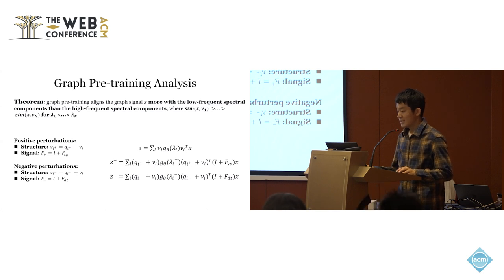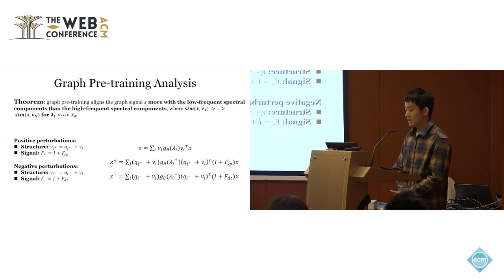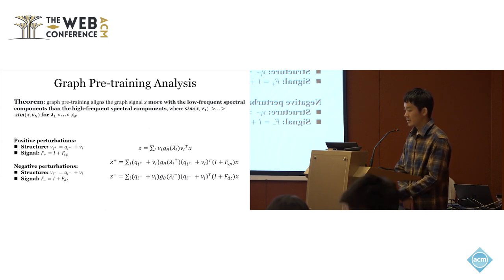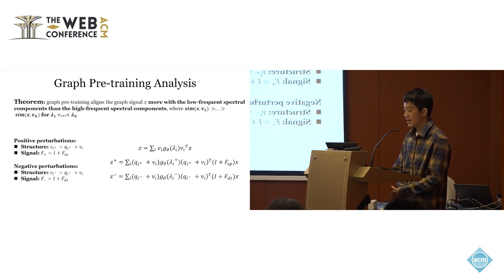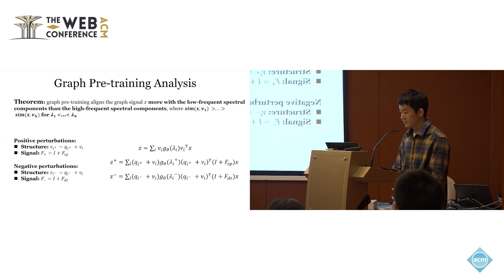And then we analyze the pre-training process under the contrastive loss, and we begin with the findings, which is shown in the theorem. It describes the character of the pre-training in the spectral space. It says that the pre-training process can make graph signals align more to the low-frequent spectral components than to the high-frequent ones. Next, we will give a proof.